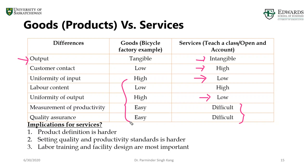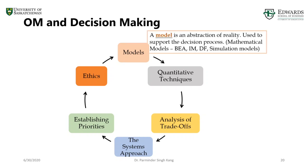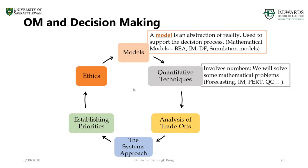This brings us to some other terms that will come into play across various chapters. A model represents reality — it could be a mathematical model or a simulation model. In chapter three, for example, we'll use demand forecasting models such as naïve forecasting, moving averages, and exponential smoothing to predict demand based on historical data. In operations management we use many quantitative techniques to analyze quality problems, demand forecasting, food analysis, inventory management, and project planning and scheduling.